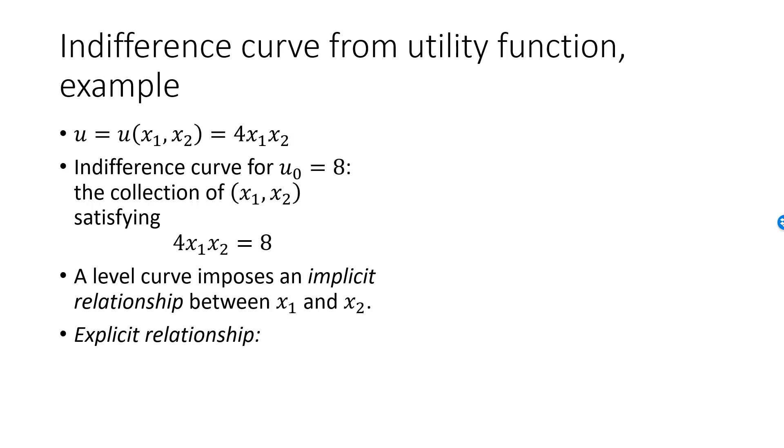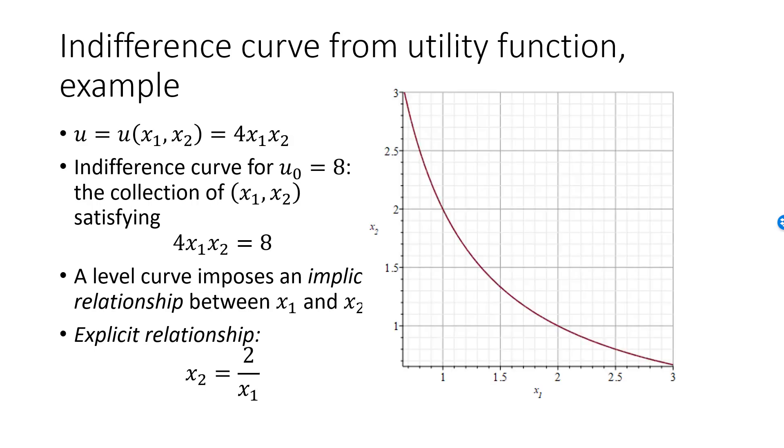In our case, if we restrict x1 and x2 to be strictly positive, then I can solve my implicit relationship for x2 by dividing both sides by x1. My explicit relationship is then x2 is equal to 2 divided by x1. Having an explicit relationship makes it much simpler to draw the indifference curve. In our case, the indifference curve is the smooth, strictly decreasing convex curve.